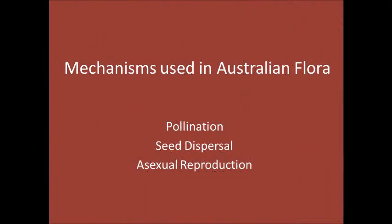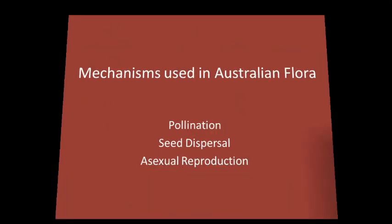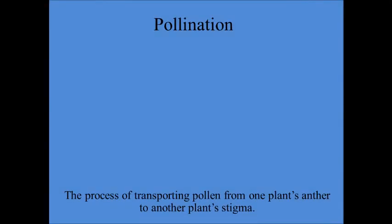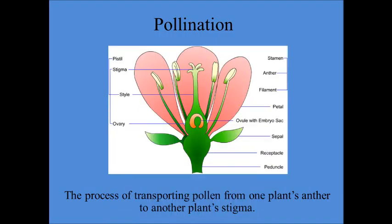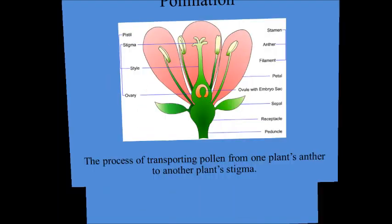Plants are more complex than what we think. Pollination is the process of transporting pollen from one plant's anther to another plant's stigma.